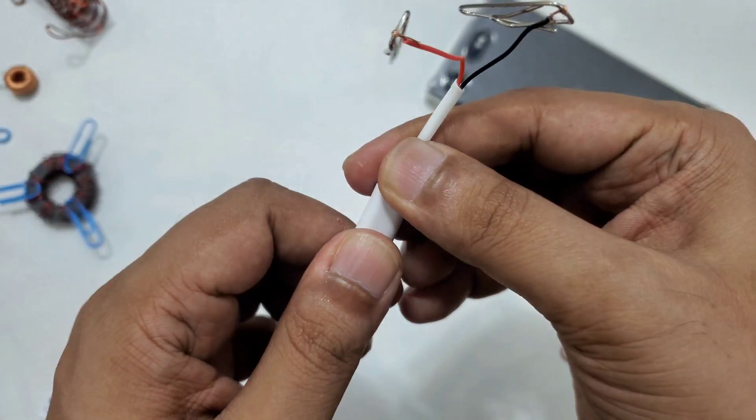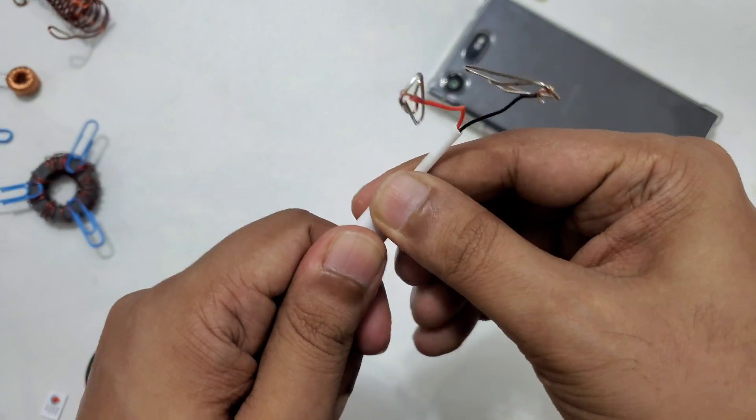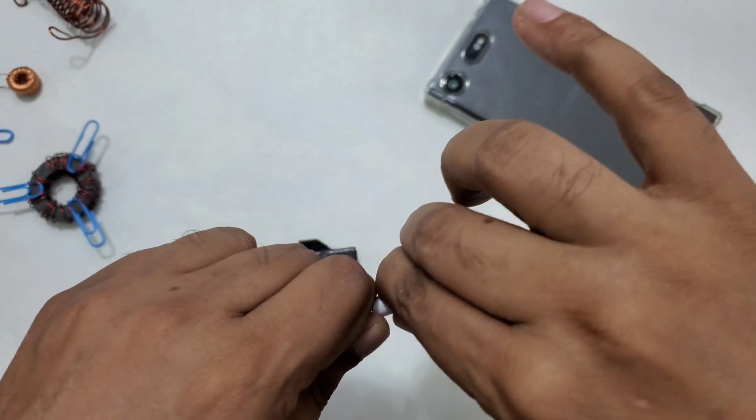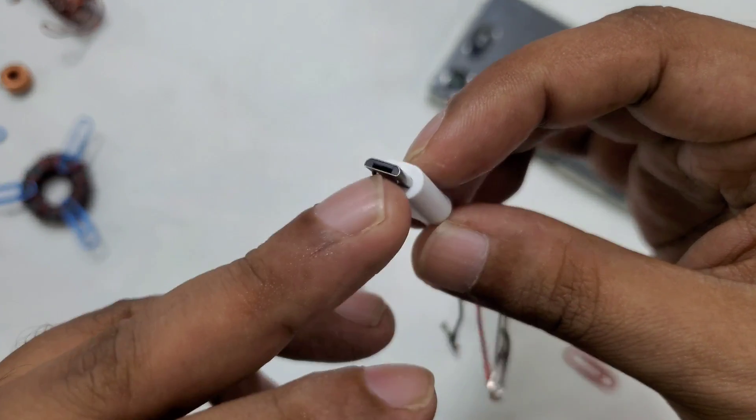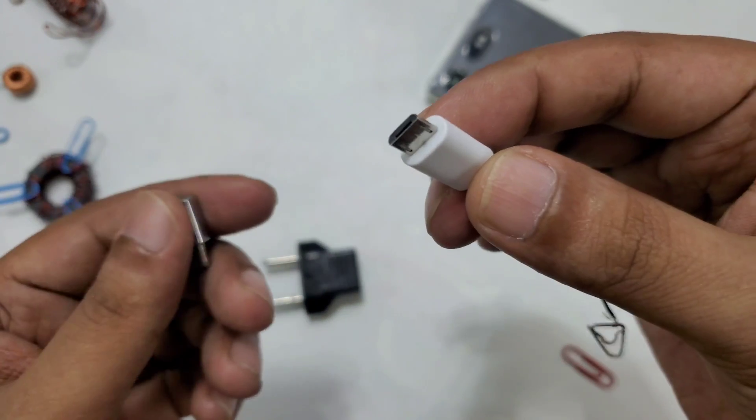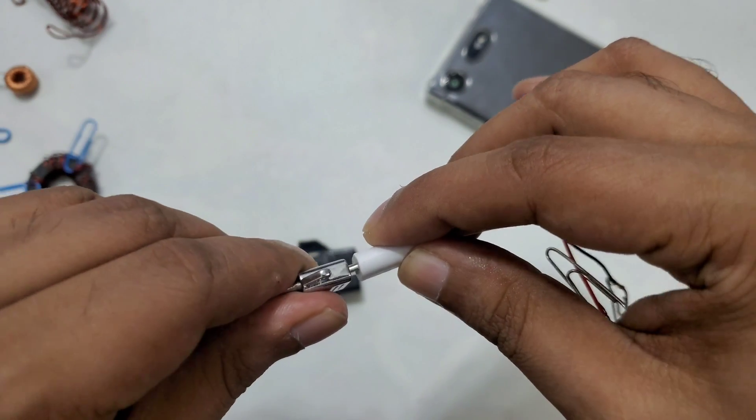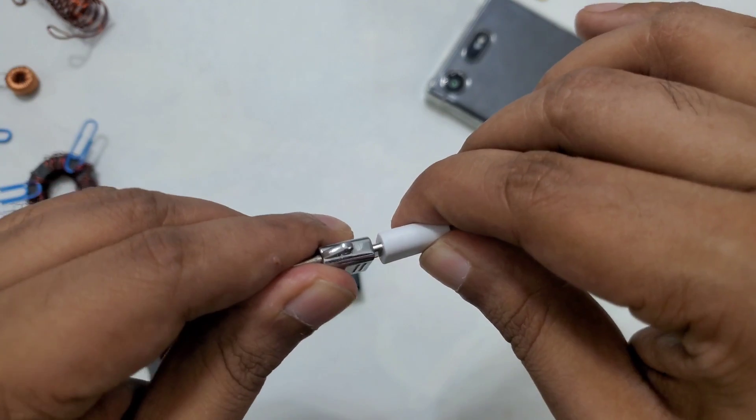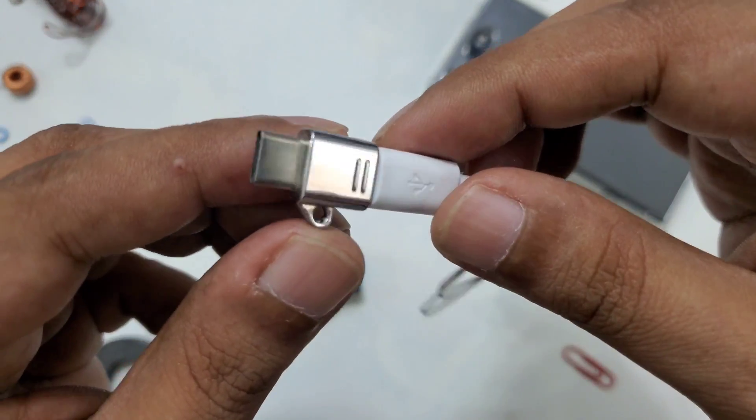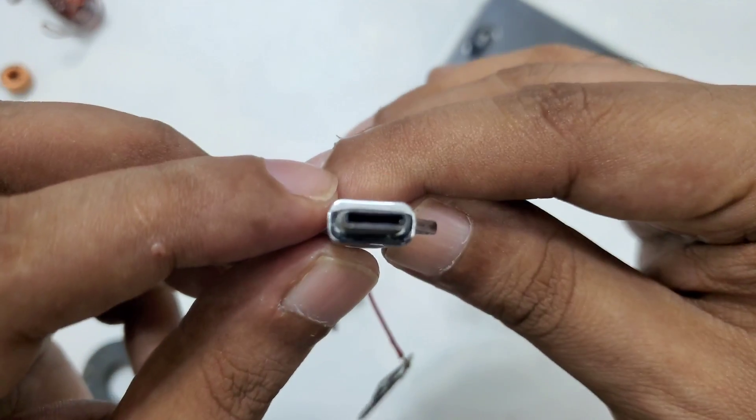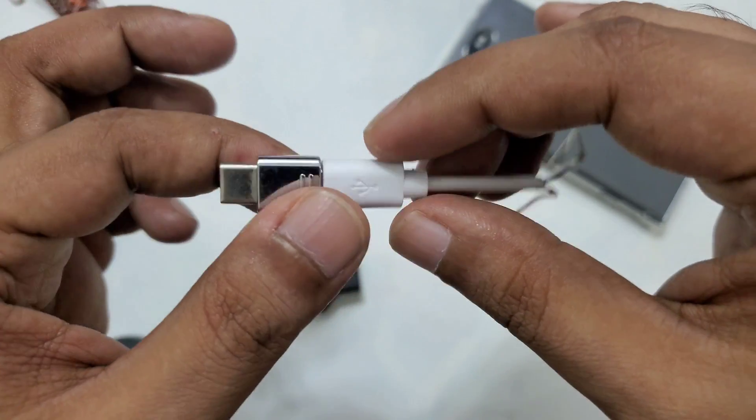Then you can take a Type-C or any cable, maybe micro USB or Type-C. I just cut it. If your phone is micro USB you can use this, and if your phone is Type-C or iPhone you can try on their connectors as well, available in the market and everywhere.